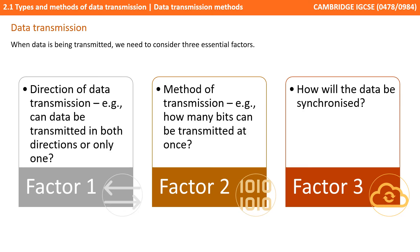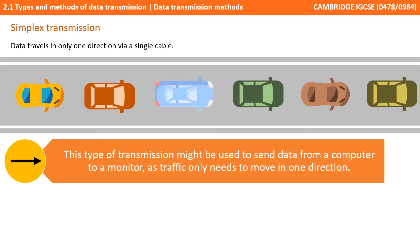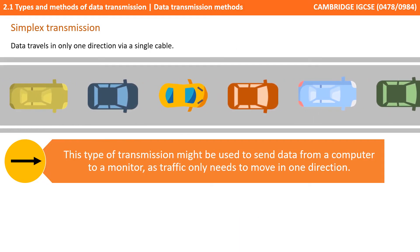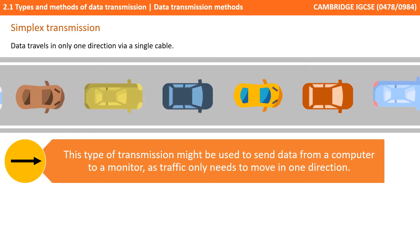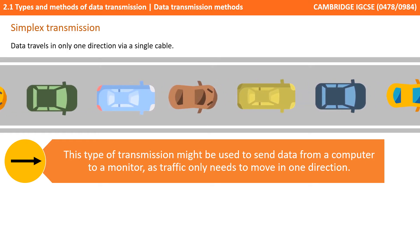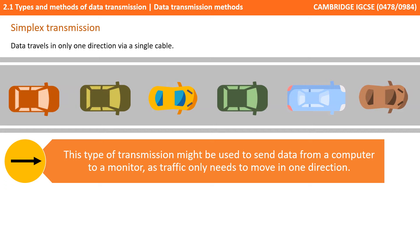Let's start by looking at the direction of data transmission. First we have simplex transmission, where data can travel in only one direction down a single cable. This type of transmission might be used for sending data from a computer to a monitor, as traffic only needs to move in one direction.